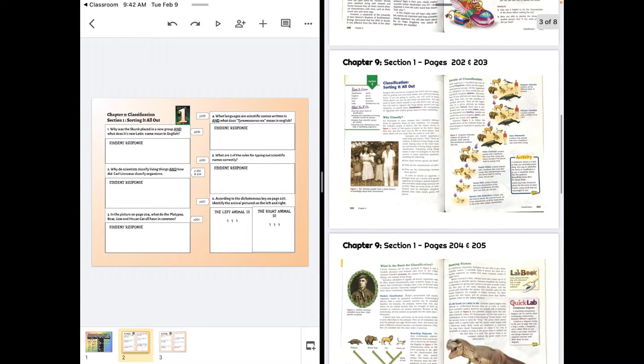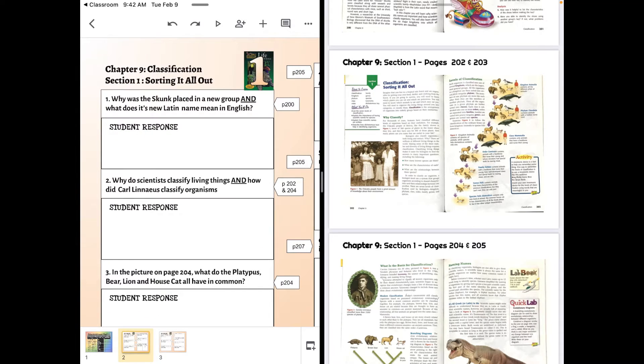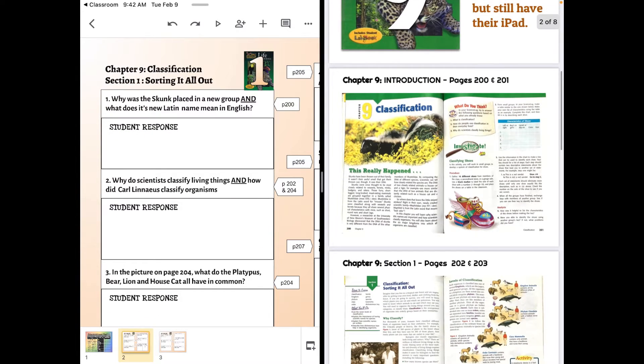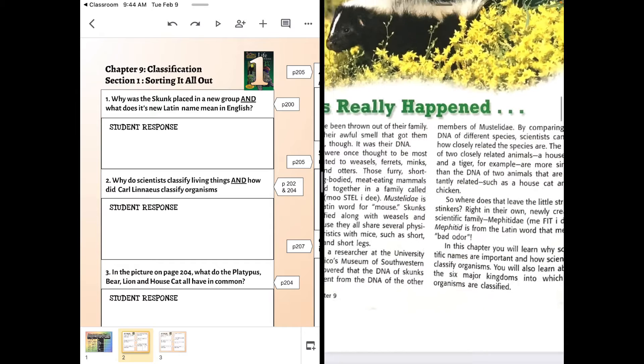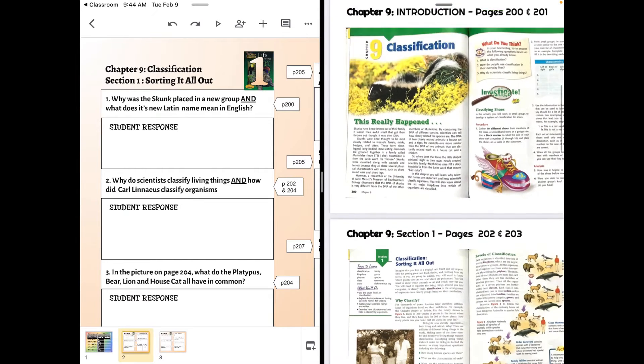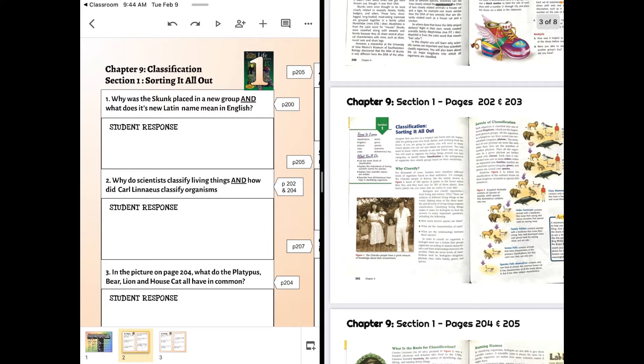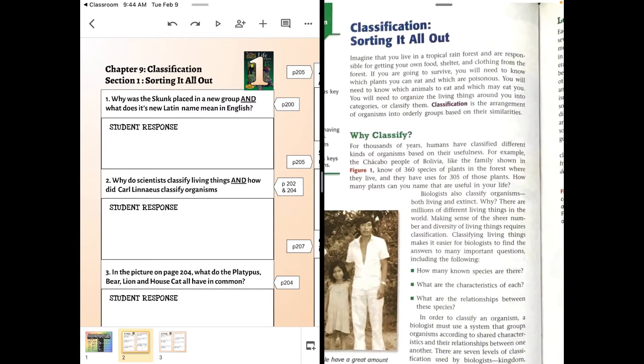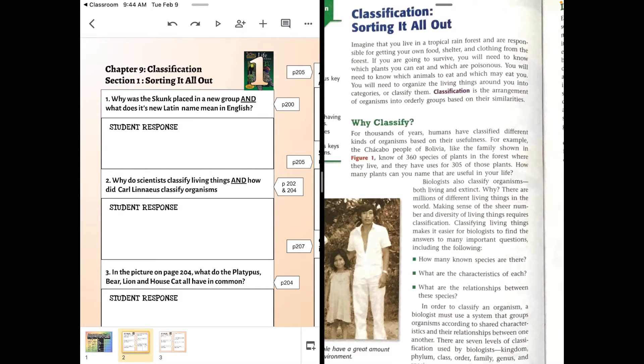And we have first up the skunk was placed in a new family, so that's this story. And when we talk about what names mean in scientific names, they're in Latin and their Latin translation to English can be very helpful. Now, Carolus Linnaeus, or why do we classify living things? That's on this page. Why classify? There's a reason for it.